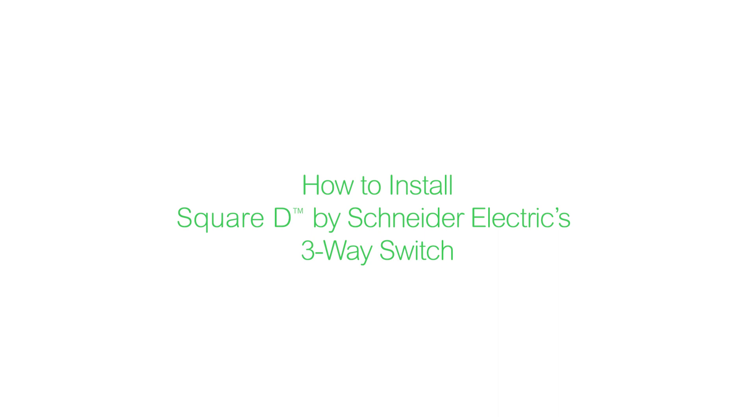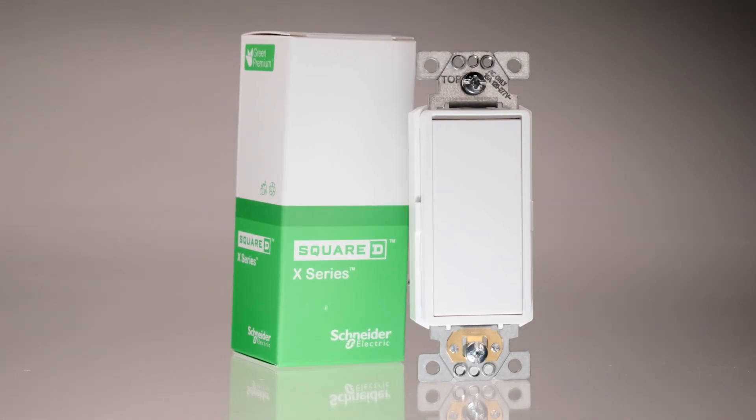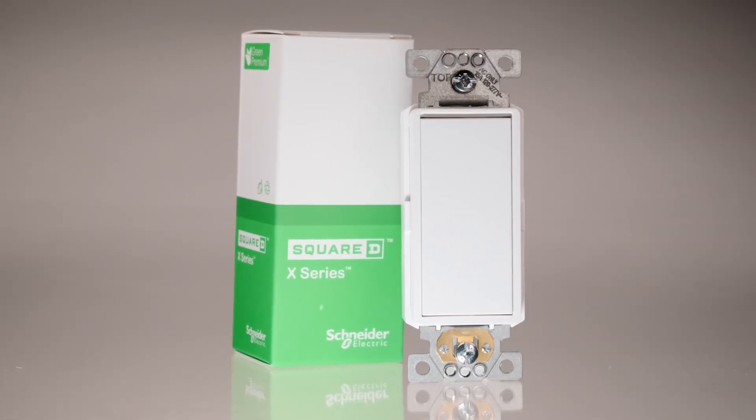This video will show you how to easily install Square D by Schneider Electric's 3-Way Switch. These switches are typically used to control a light or device from two different locations.